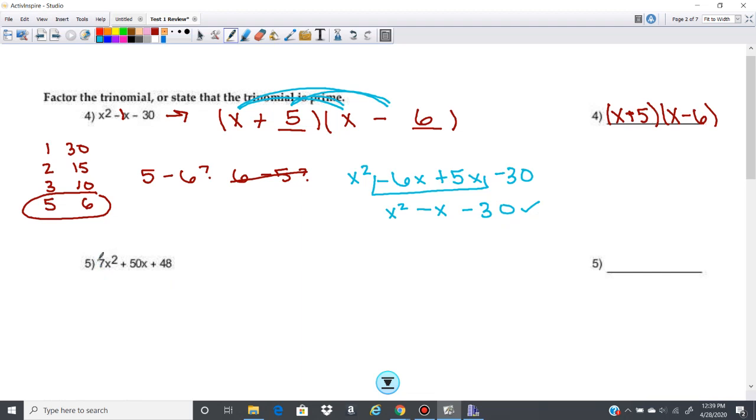Now this next one here is not a monic trinomial. So this actually has a term in front of it. So first thing we're going to do is look to see if we can take out a GCF. And it's not looking like I can. So the next thing that we want to do is we want to set this up for factoring either using the mistake method or the AC method.